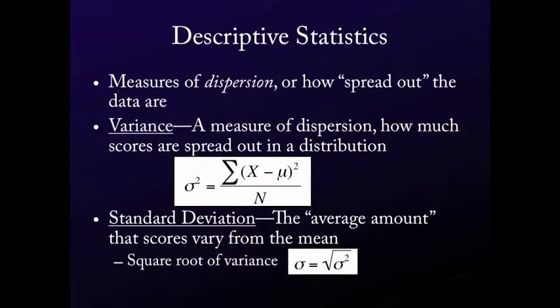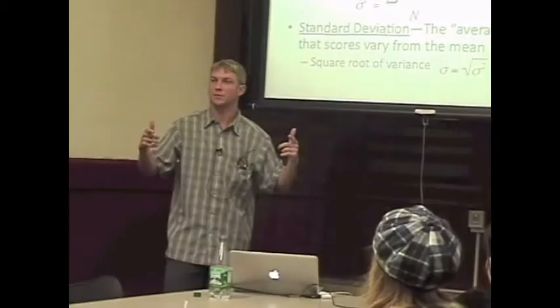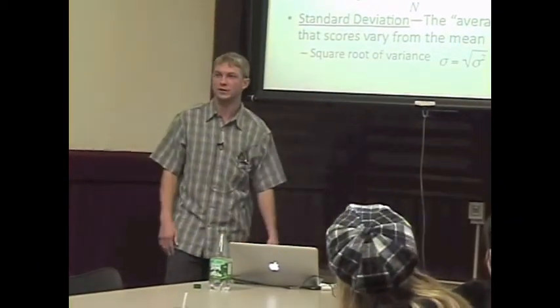And then you're dividing by n. Which, if you think about it, the mean is just all the scores added up divided by the number of scores. This is roughly all the different scores added up divided by the number of them. Sort of like the average amount that they're going to vary.